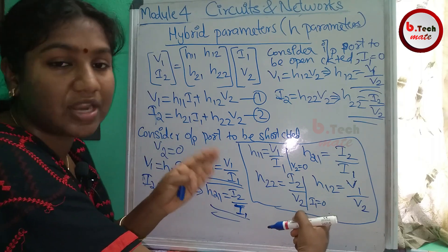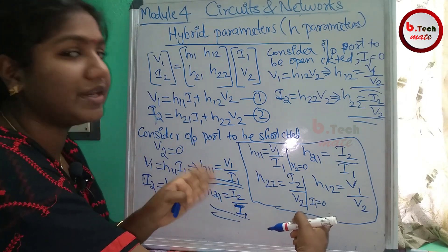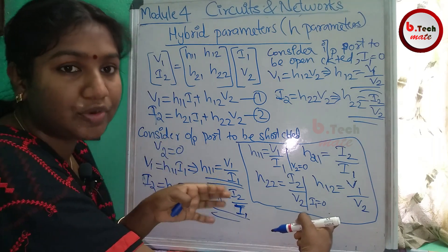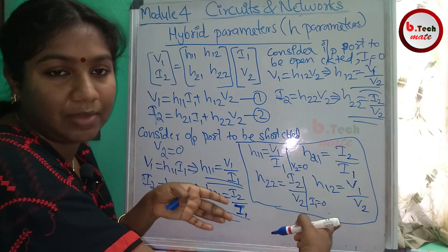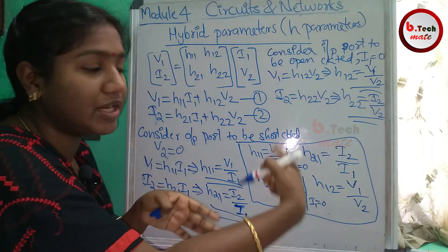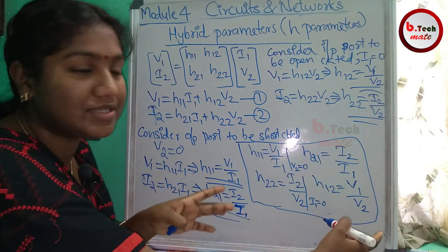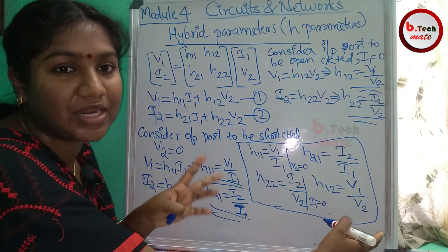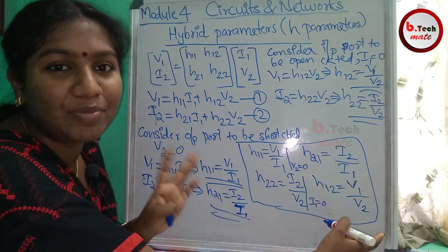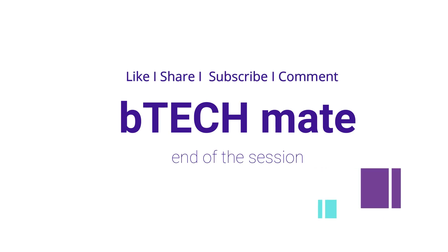To find h-parameters, first we short the output port and derive two parameters (H11 and H21). Next, we open the input port and derive two parameters (H12 and H22). The equations are similar to Z and Y parameters but the conditions are different. We will work through four different h-parameters in the next problem.